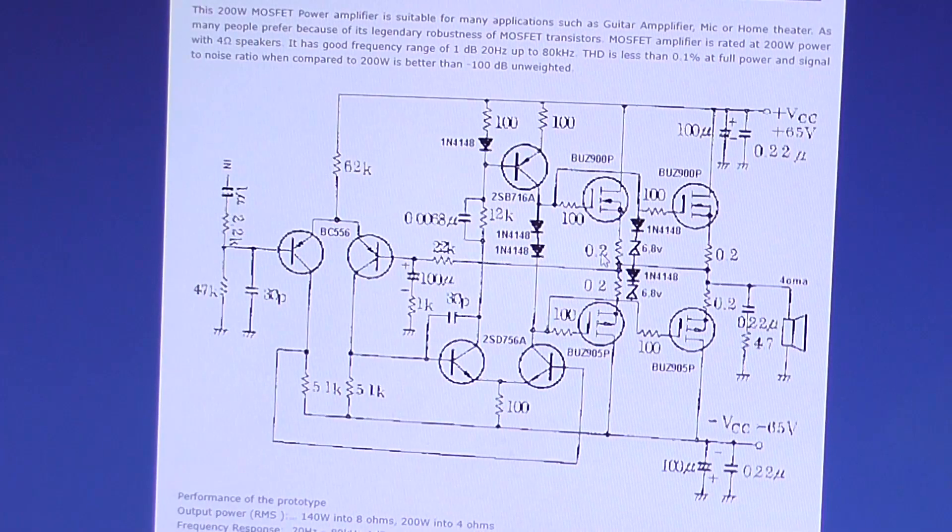You connect it to the output bus makes no difference. There's still a 30 volt DC offset on the output.